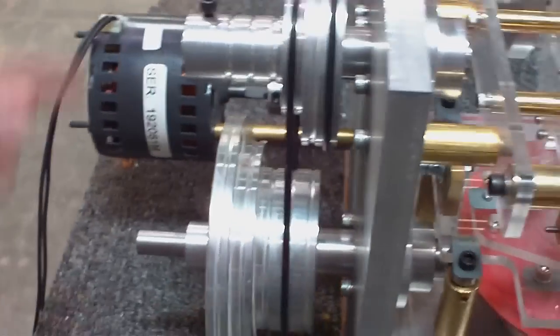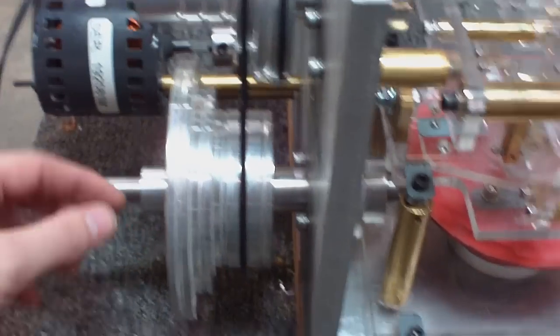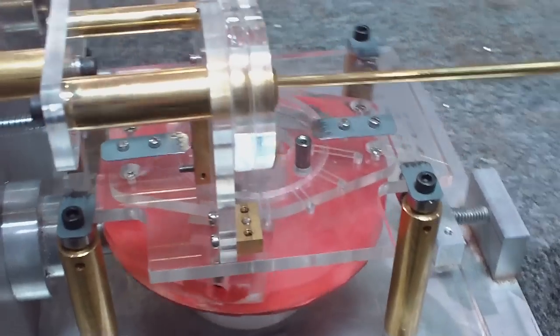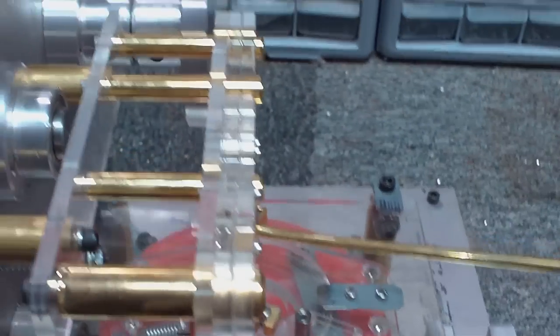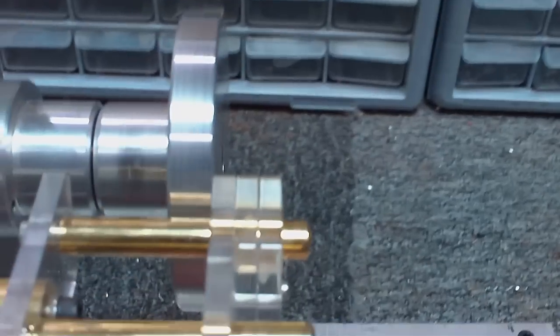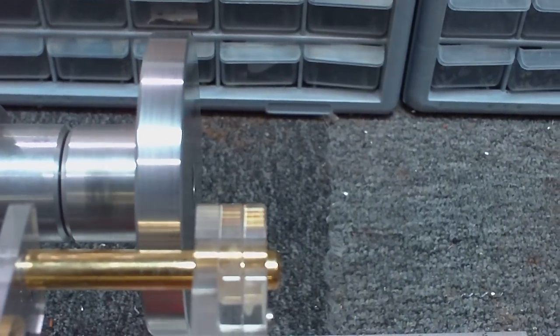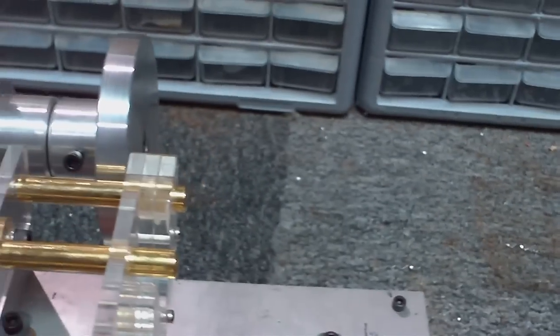And basically you can see all the belts here moving everything. As this pulley moves, the cam disc underneath the wire guide moves. So as I rotate the guide you can see the wire guide move back and forth. It'll be demonstrated a lot more as the machine is turned on.